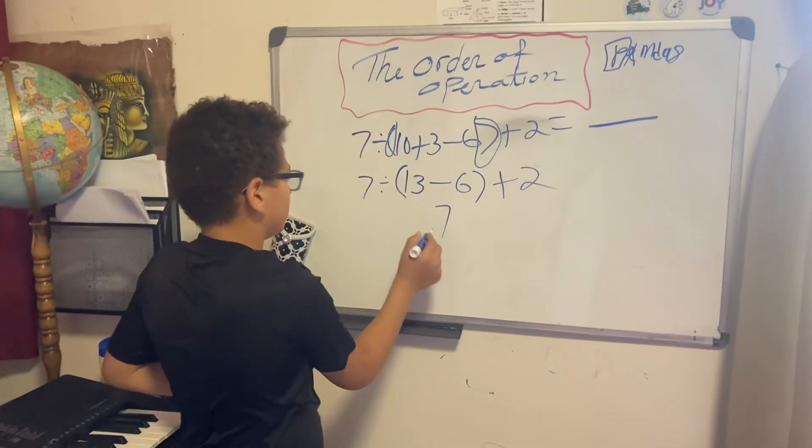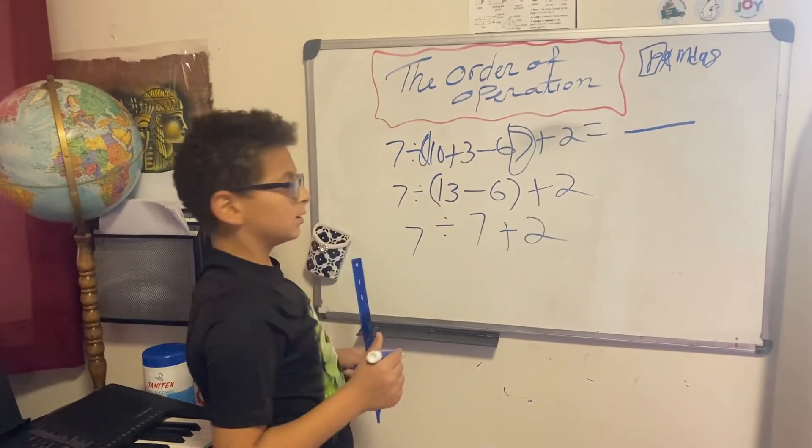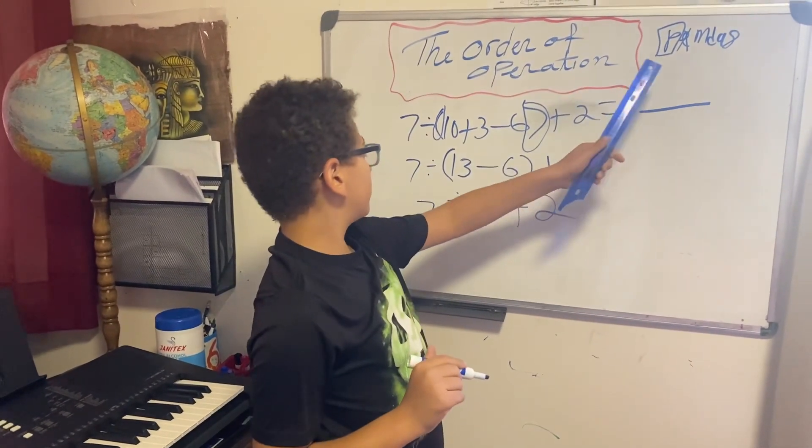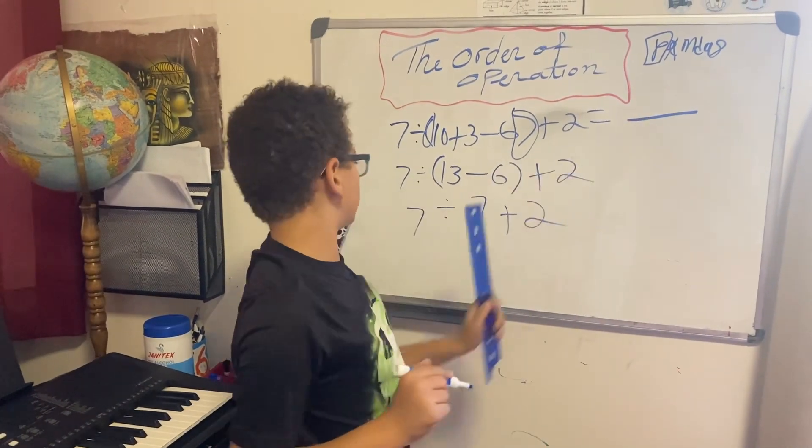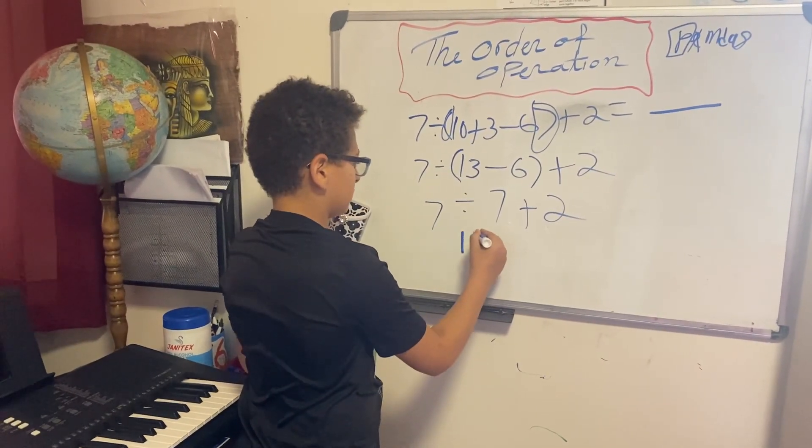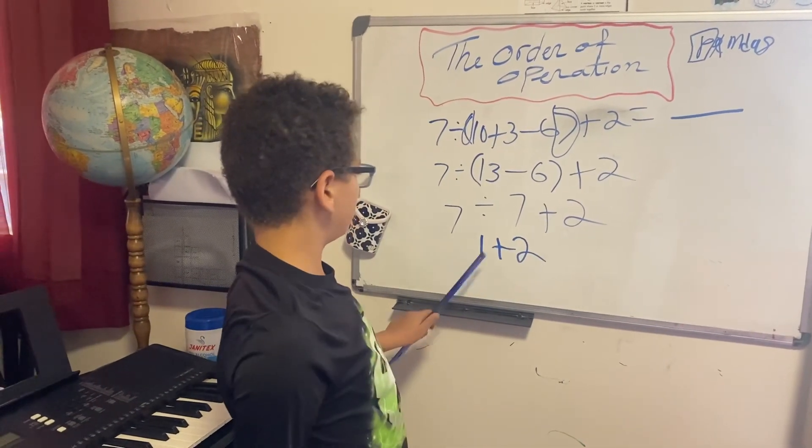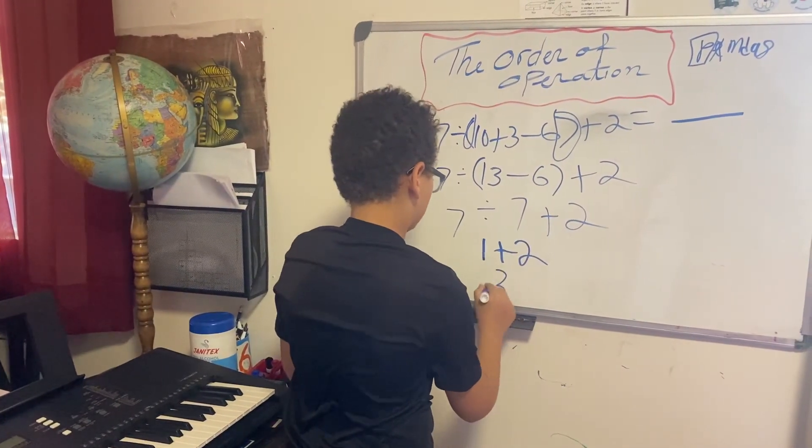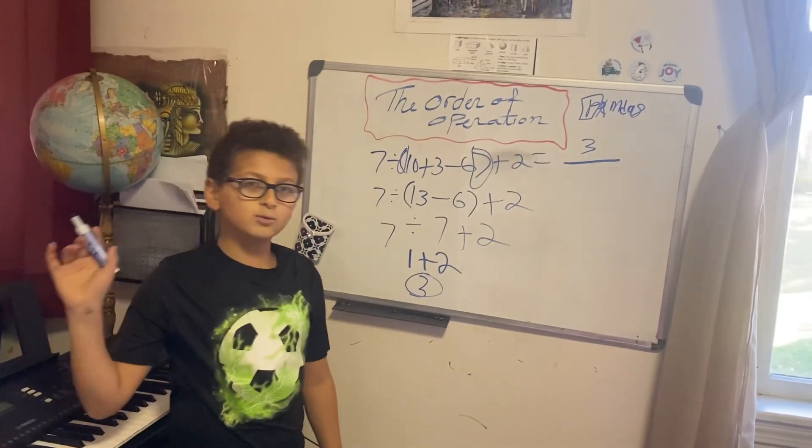Now we go through the order again. There's no more parentheses, no multiplication. There is division, so we do 7 divided by 7 equals 1 plus 2. 1 plus 2, simple fact, obviously 3. So our final answer is 3.